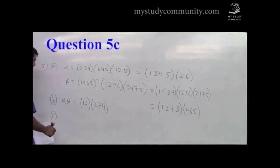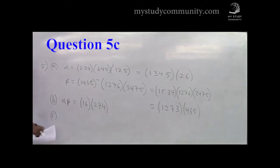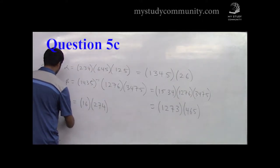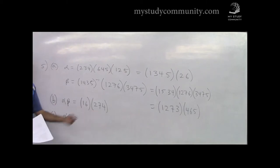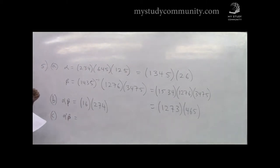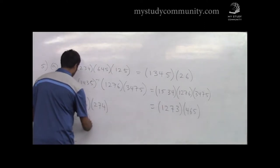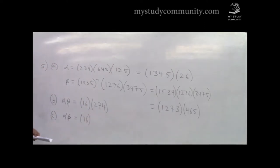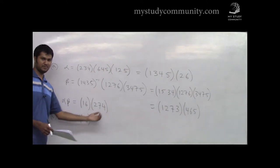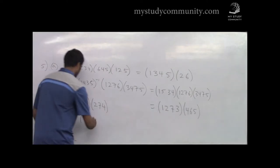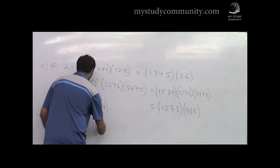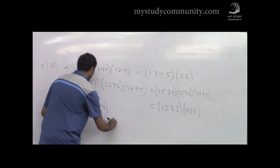Part C: write alpha·beta as a product of disjoint cycles, and then write that product as a product of transpositions. Note it's transpositions, not disjoint cycles. For example, (2 4 7) as transpositions: you flip the last two, giving (2 4)(2 7). So the final answer is (2 4)(2 7).